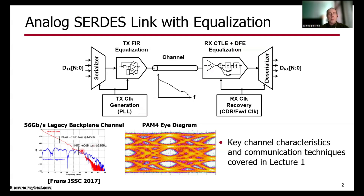However, as data rates grow above 56 gigabits per second, it gets very difficult to implement systems with relatively simple binary PAM2 non-return-to-zero modulation. Instead, what we need to do is implement more spectrally efficient PAM4 modulation, where we're sending two bits per symbol, such as the eye diagram shown here.